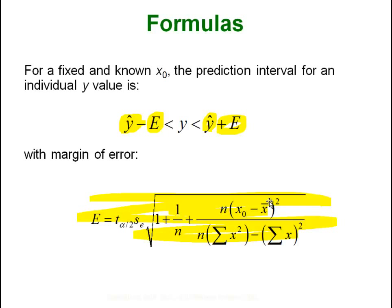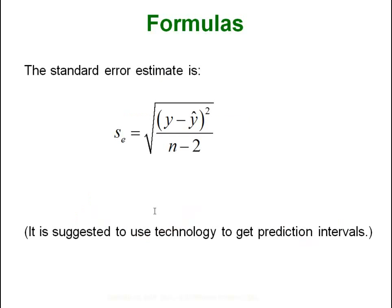The standard error that is in this equation, see that little SE down there, this piece right here? That's the formula for that. It's just Σ(y - ŷ)² over n - 2.